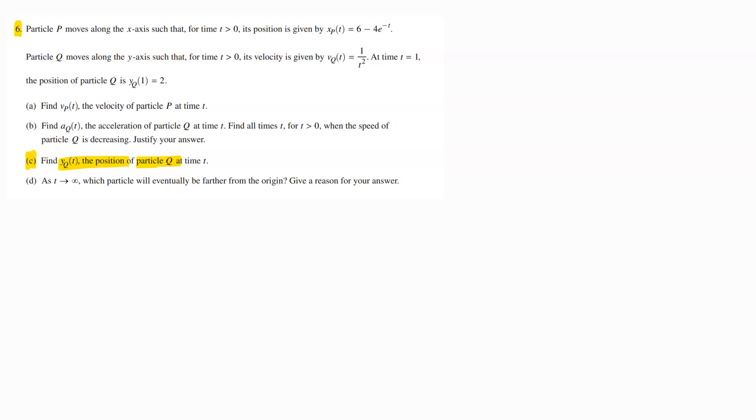What we do on this is what's called an initial value problem. The first thing we want to remind ourselves of is this physics relationship. If we've got an original function which is our position function, then the first derivative of position is equal to velocity.